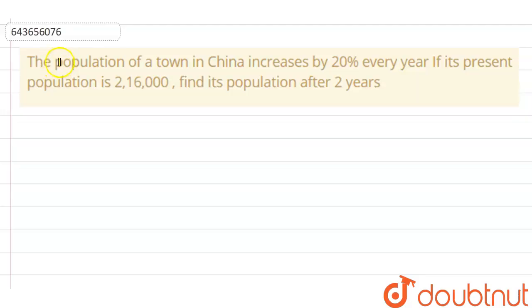Here the question is: the population of a town in China increases by 20% every year. If its present population is 2,16,000, find its population after two years.